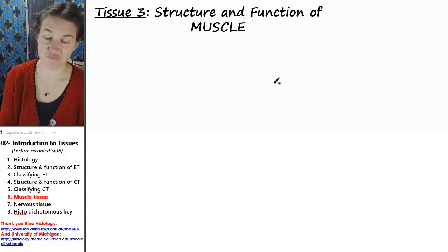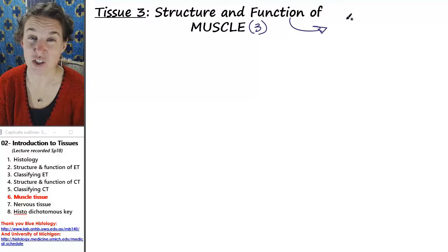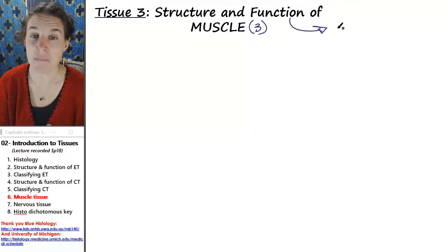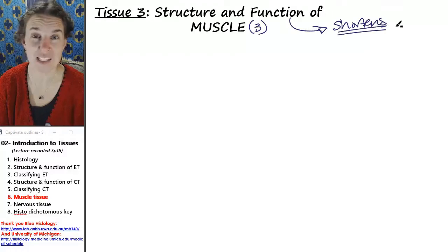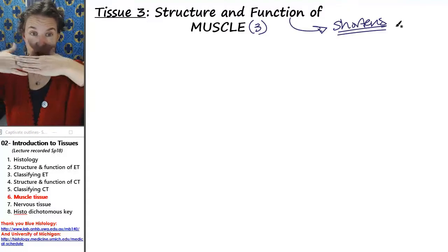Muscle tissue. There's actually only three types of muscle tissue, and its function is super straightforward. Muscle tissue shortens. That's it. The tissue itself shortens.